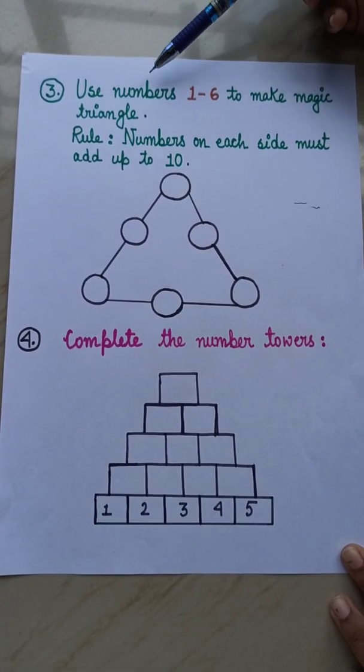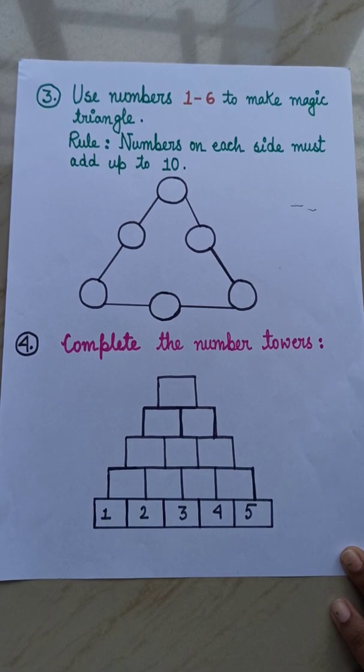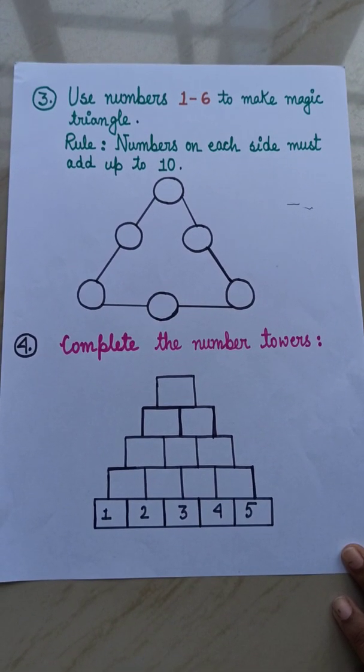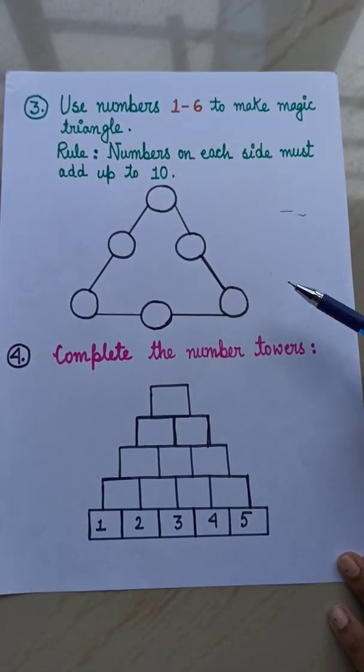Sum number 3 is, use numbers 1 to 6. That means, you have to use numbers from 1 to 6. That is, 1, 2, 3, 4, 5, 6. These numbers you have to use and you have to make magic triangle.